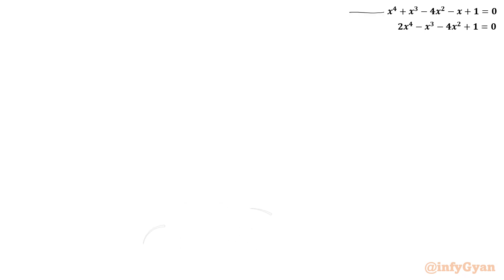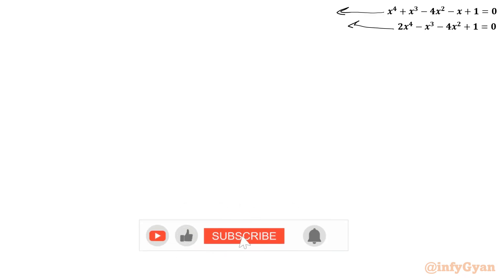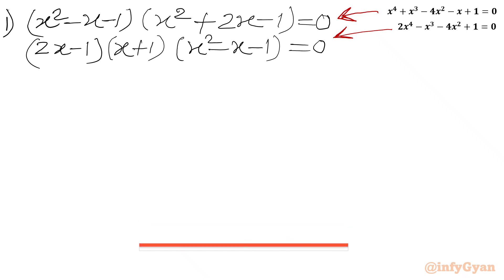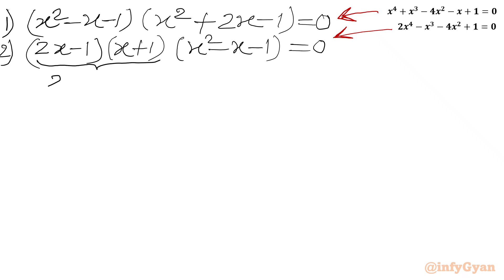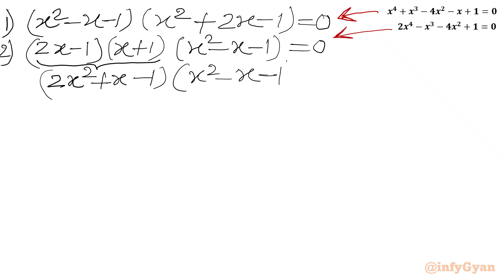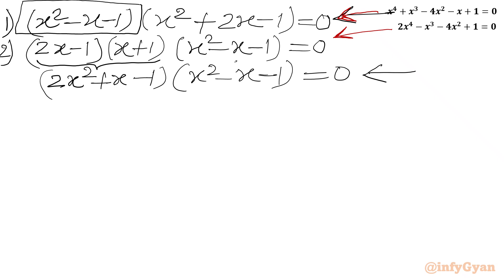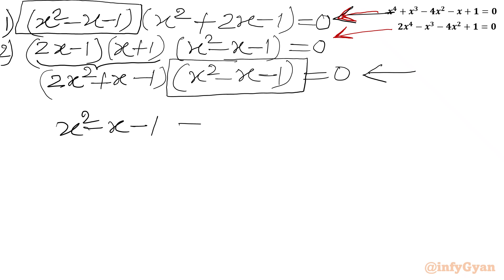Writing both equations in factored form: Equation 1 is (x² + 2x - 1)(x² - x - 1) = 0, and Equation 2, after multiplying brackets, is (2x² + x - 1)(x² - x - 1) = 0. The common factor is clearly x² - x - 1. We find the roots from this common factor by setting x² - x - 1 = 0.